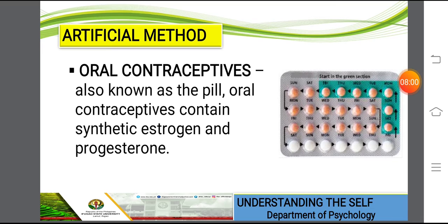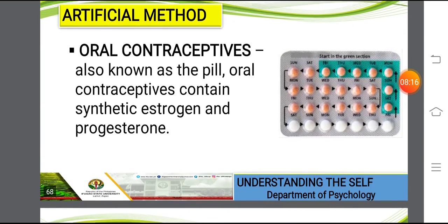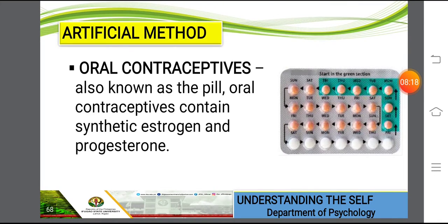After those natural methods, let's move to artificial ones. First is the oral contraceptive, also known as the pill. It contains synthetic estrogen and progesterone and is commonly used, especially by housewives and women who are planning their families. However, some women no longer prefer this artificial method due to health concerns.